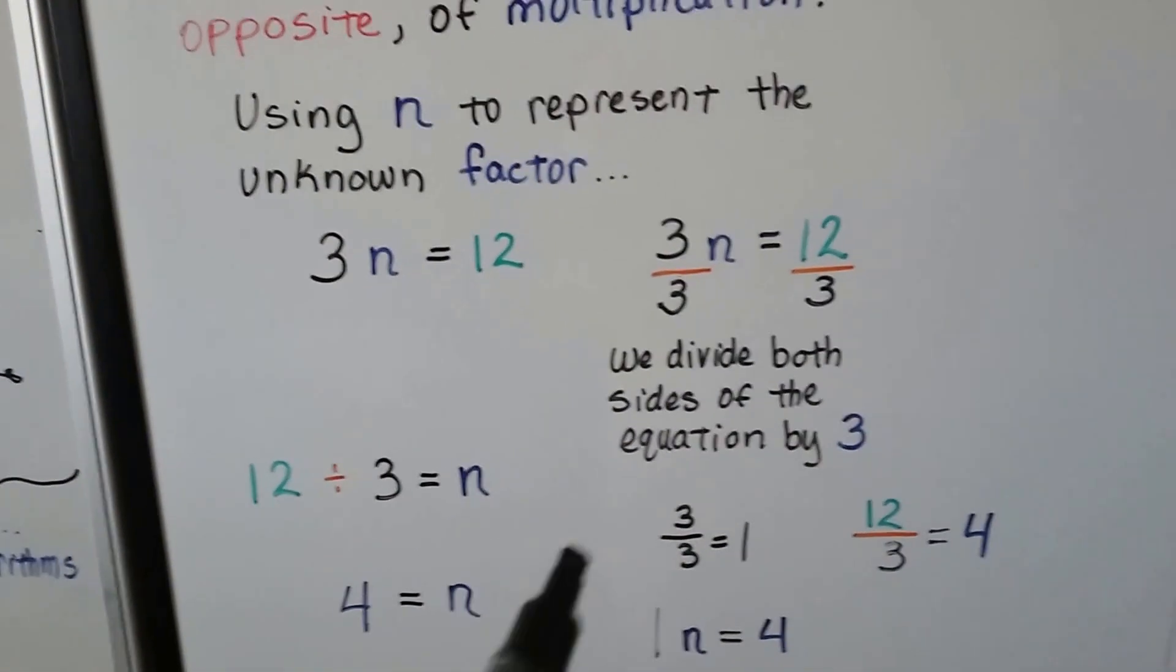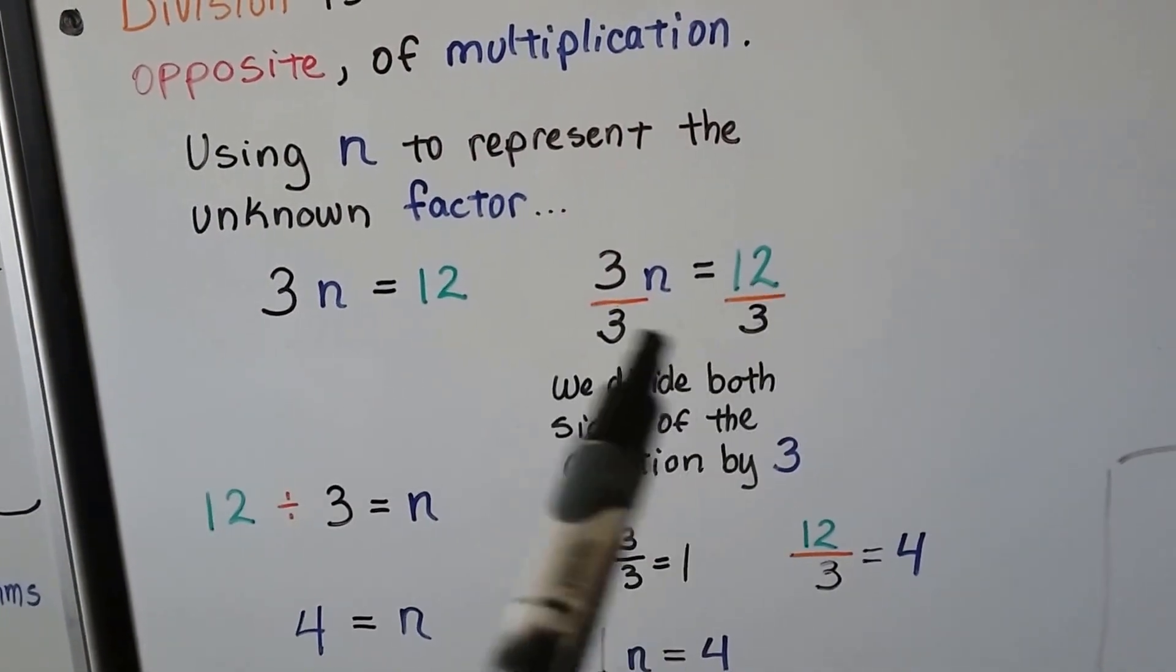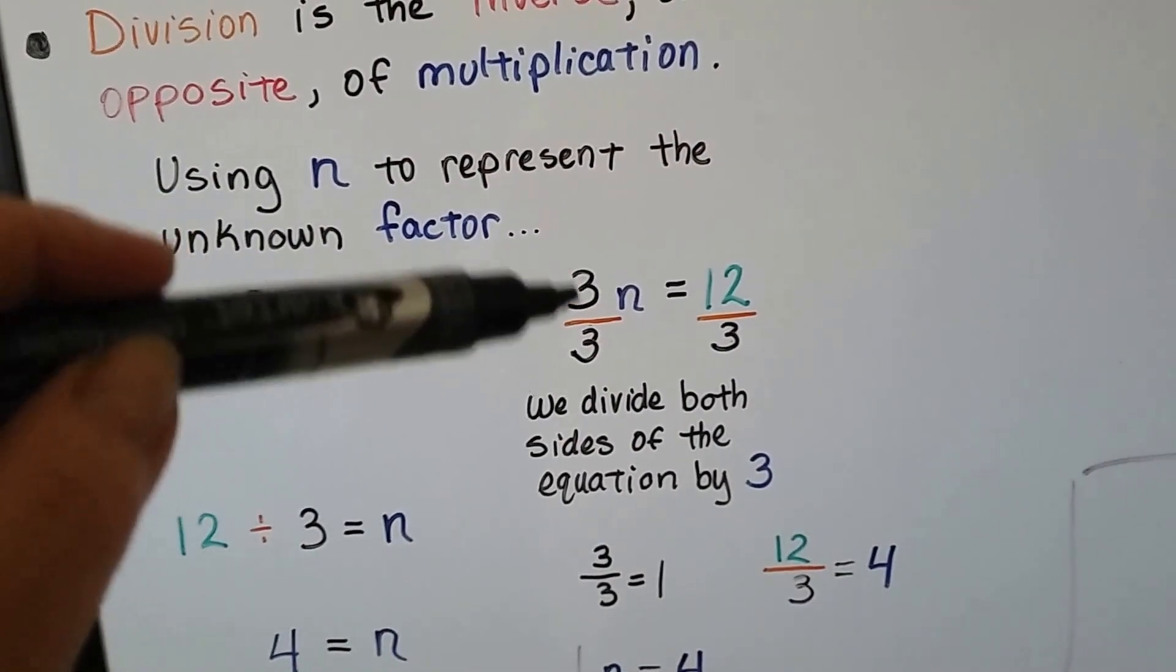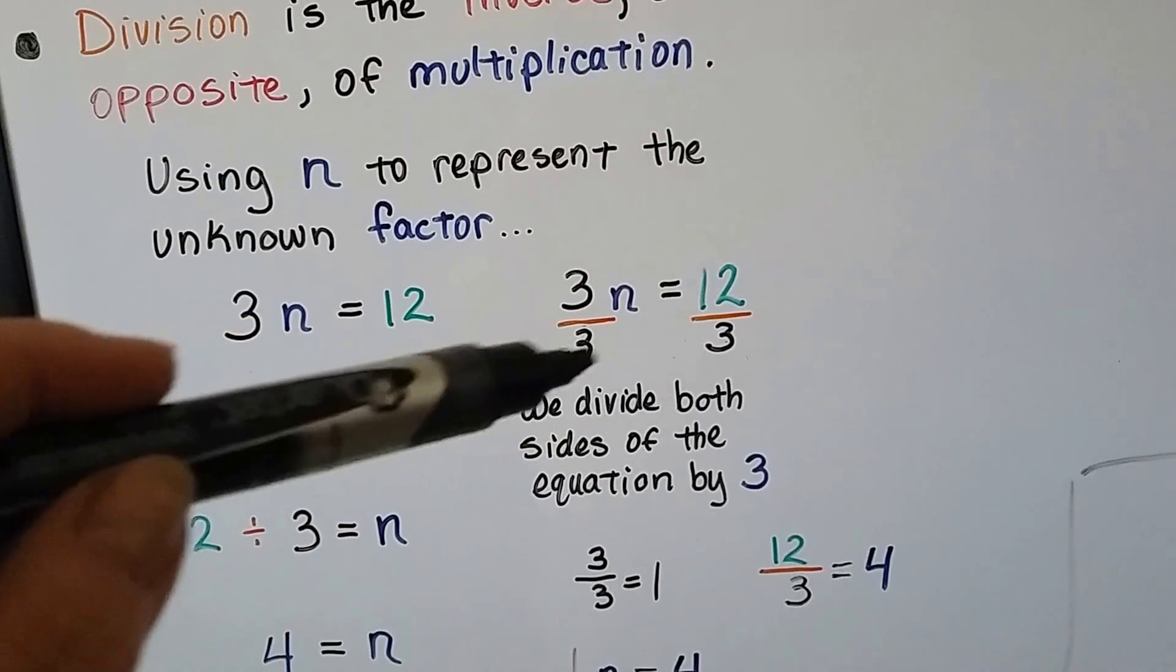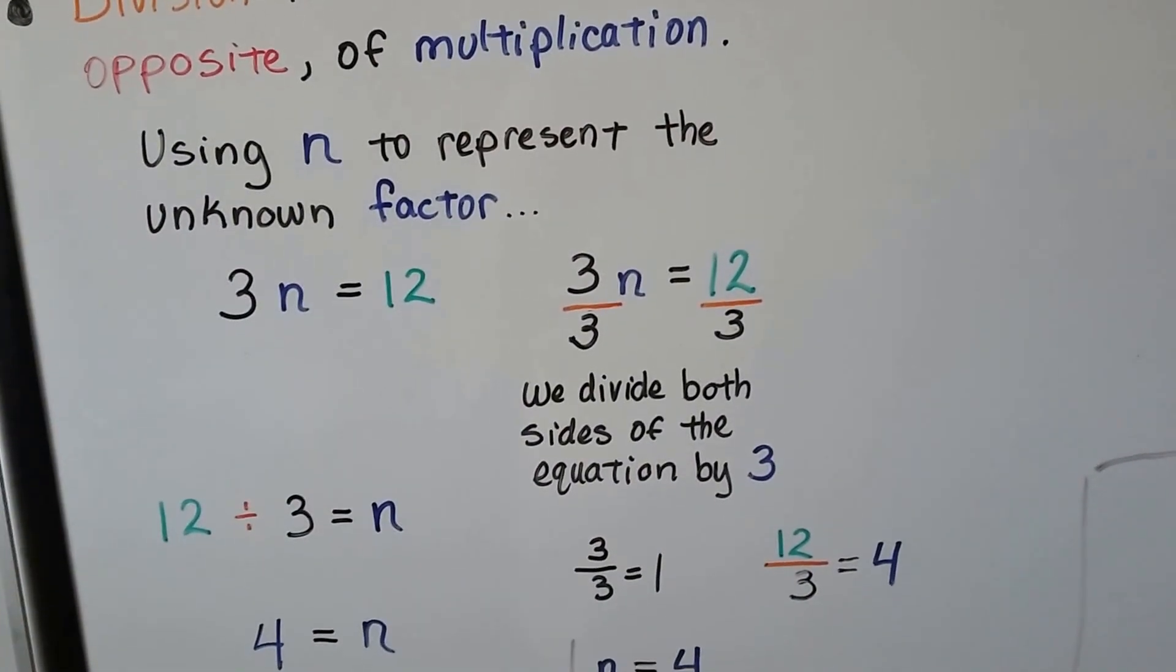We know it's a 4. We can also draw a fraction bar underneath both sides of the equation. And this is the coefficient. We divide both sides by this coefficient 3. Because remember, fractions are just little division problems.